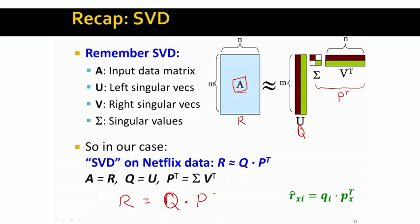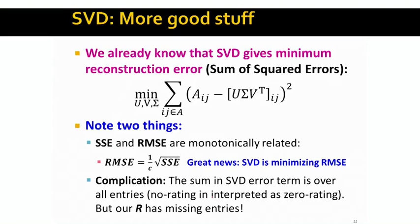Even though it seems we are done, we are not really done. One more good thing that comes from SVD for free: SVD gives us minimum reconstruction error — the minimum sum of squared errors between the true value of an entry in the matrix versus the approximated value. A_ij is the true entry and U sigma V transpose gives the approximation. SVD is actually the solution to this minimization problem — finding the three matrices such that the approximation is as good as possible.